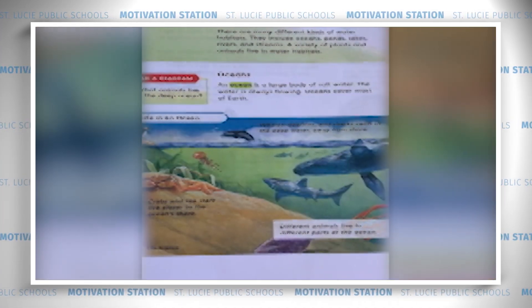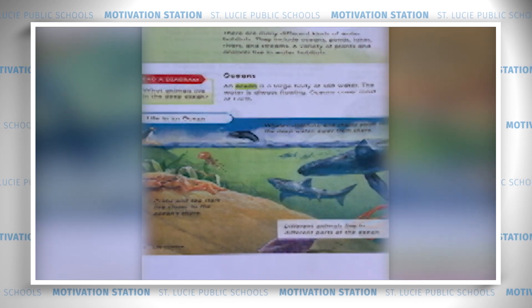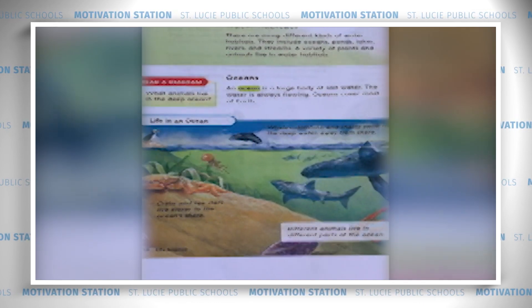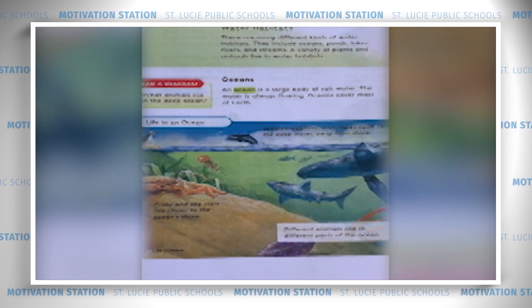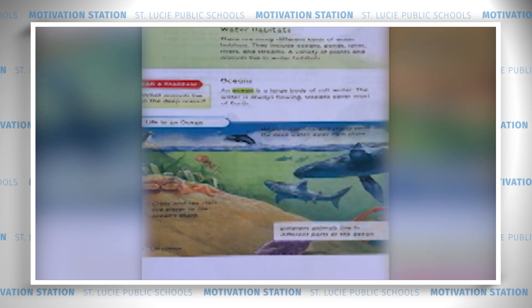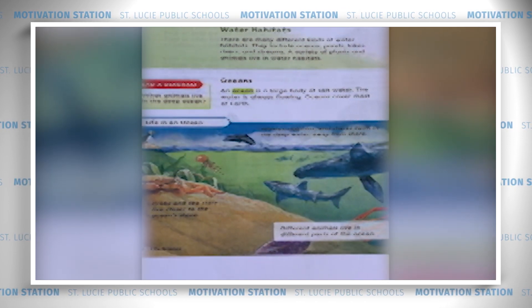I'm going to give you an opportunity to follow along with me as we read. This is the first time we're reading the water habitat, so it's important for us to take our time and focus on the text. Water habitats. There are many different kinds of water habitats. They include oceans, ponds, lakes, rivers, and streams. A variety of plants and animals live in water habitats. We're going to focus today on oceans and ponds.